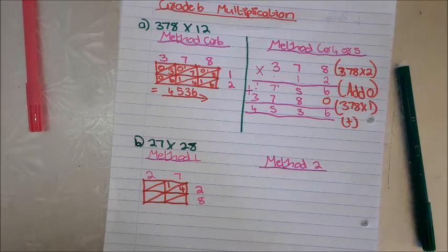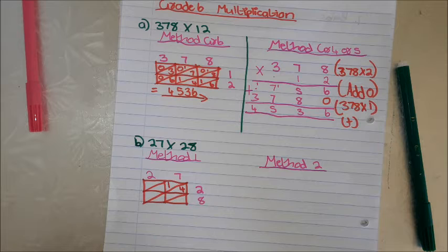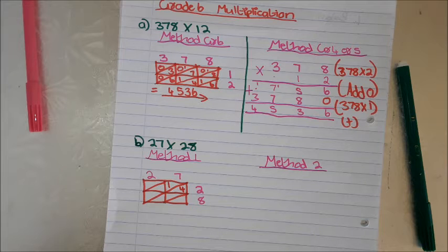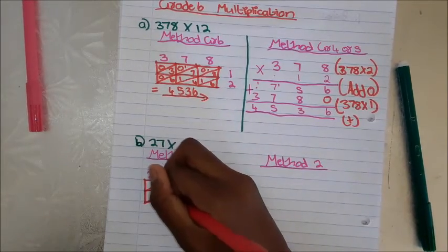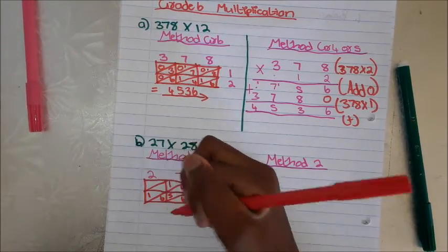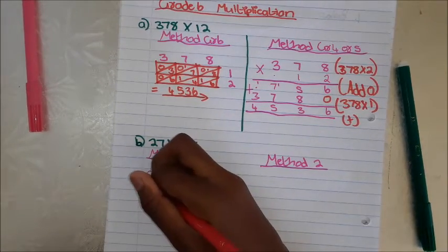Now 7 times 8 — if you don't know your times tables, I also struggle. The times tables I know are from times 1 to times 6, but from times 7 I might have to check. 7 times 8 is 56. Then 2 times 8 is 16. Then 2 times 2 is 4. Put the 0 down.